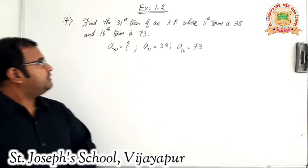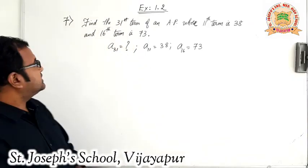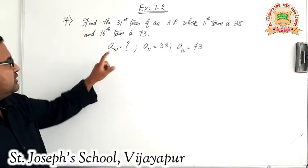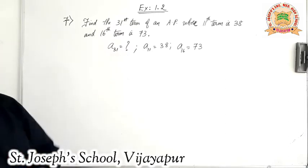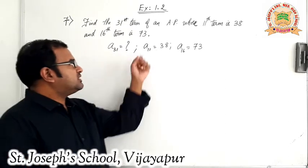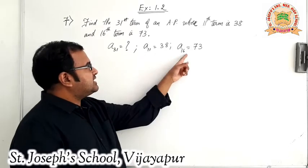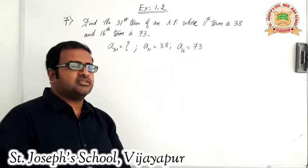Question number 7, exercise 1.2 says: find the 31st term of an AP whose 11th term is 38 and 16th term is 73.